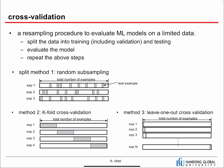Cross validation is used when we want to evaluate many different machine learning models on a limited dataset. We split the data into training, validation, and testing, evaluate the model, and repeat to find the best model. The first method is random subsampling — randomly use 90% for training and 10% for testing — and repeat many times. This is not very popular.